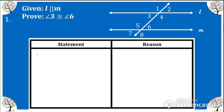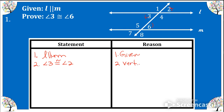Our first example: we are given that lines L and M are parallel, and we want to prove that angle 3 and angle 6 are congruent. Let's state what is given: L is parallel to M — reason is given. We can't just say these are congruent because of alternate interior; we have to use a few other postulates and theorems. I know that angle 3 and angle 2 are congruent because they are vertical angles, so angle 3 is congruent to angle 2 — vertical angles are congruent.